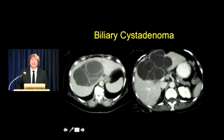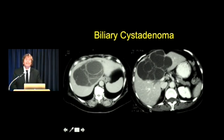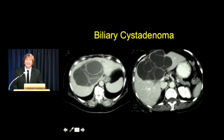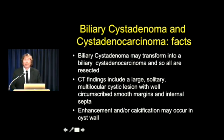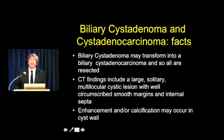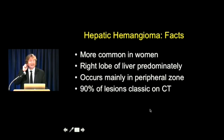Biliary cystadenomas are uncommon but have a classic appearance: a septated cyst. The biggest challenge would be distinguishing from hydatid disease - hydatid disease tends to have a history of travel, fever, and about 70% have calcification. With biliary cystadenomas and cystadenocarcinomas, importantly, the cystadenomas can become carcinomas so they're always resected. When you see mural nodules or irregular enhancement, you know you're dealing with a carcinoma, but the surgeon will be aggressive regardless. CT findings: classically large, solitary, multilocular cystic lesion with well-circumscribed margins and internal septations. Enhancement or calcification may occur within the cyst wall.